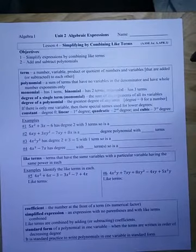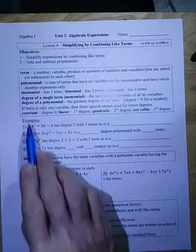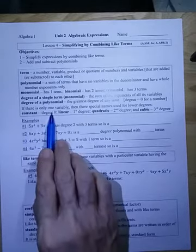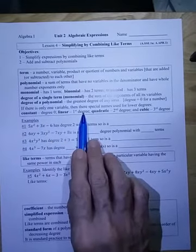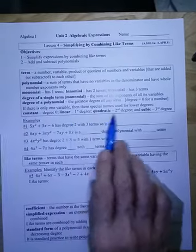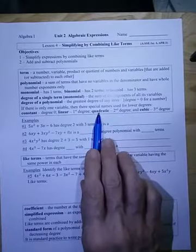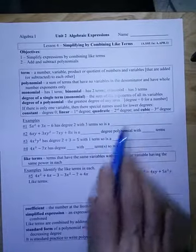If there's only one variable, special names are used for the lower degrees. Degree zero is constant. The first degree is linear. Second degree is quadratic. Third degree is cubic.